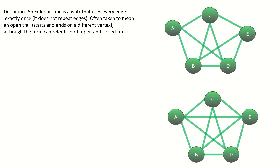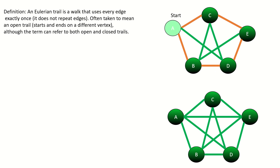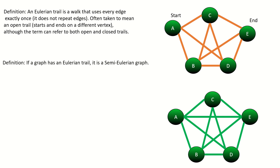An Eulerian trail is a walk through a graph that does not repeat edges, and that passes through every edge in the graph exactly once. It is generally taken to mean an open walk — that is, one that starts and ends on different vertices. If we're being strict with the definition of trail, it could refer to both a closed and open walk that passes through every edge exactly once. If a graph has an Eulerian trail, we say it is semi-Eulerian.